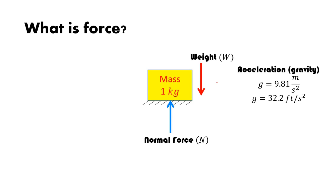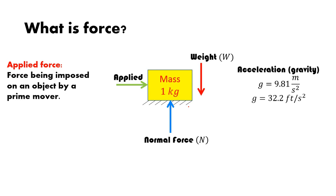In the vertical direction the weight and normal force are balanced. Going back to our problem: we have a pallet filled with steel and we want to figure out what tow motor is appropriate to move it. The tow motor applies what's called an applied force — a force imposed on an object by a prime mover, whether that's you pushing, pulling with a rope, using a forklift, or dragging it with a crane or tow motor.